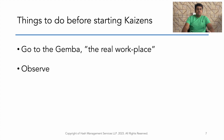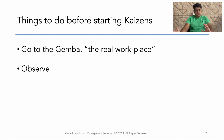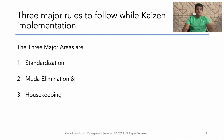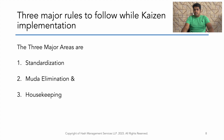There are two things which we have to do before starting Kaizens. One is go to Gemba. What is Gemba? Gemba is the real workplace in Japanese. And the second thing is to observe the activities which are happening in the Gemba. And based on that, there are three important rules which we have to follow during a Kaizen implementation.